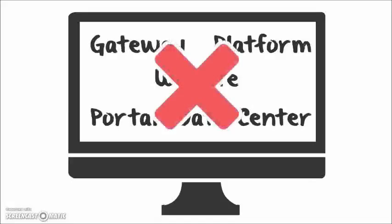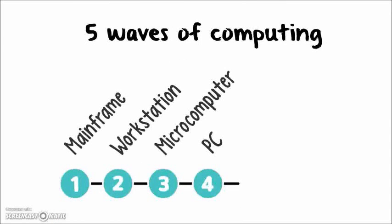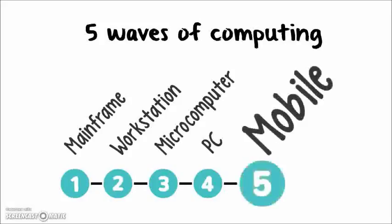I decided that the website wasn't really for me, and there's good reason for that. There are five ways of computing. Way back we had mainframe computers, then came workstations, microcomputers, and PCs. Websites are really designed for PCs. But the wave that we're in now is the mobile wave. Most people, especially those in the younger generations, use mobiles — mobile internet and mobile apps — for accessing information about their world.